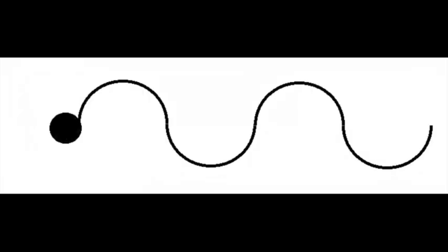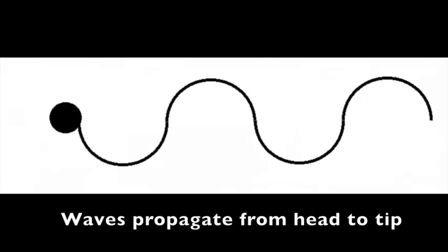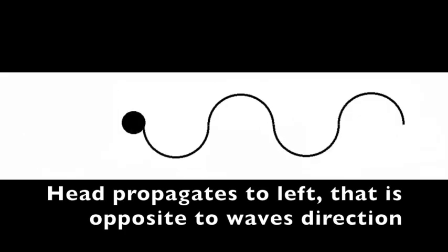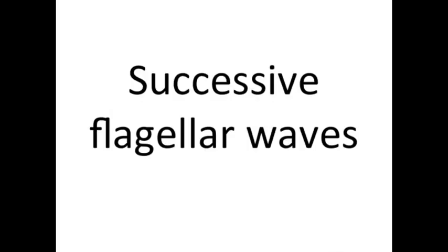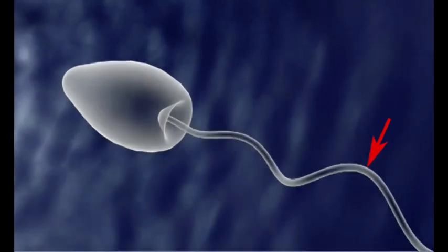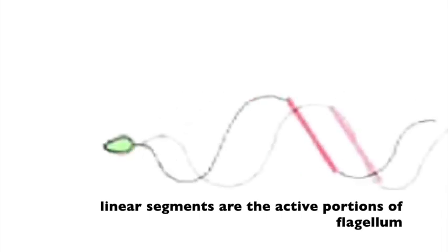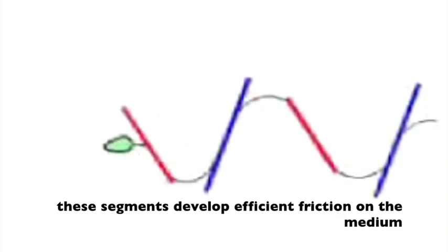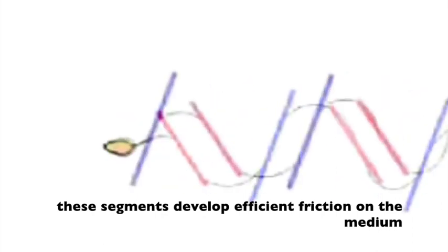Wave propagation: Right after activation, waves propagate from the head to the flagellar tip. This generates a force that will propel the sperm with the head forward. The wave crests progress from left to right and the progression of the head is from right to left. In between two wave crests is a linear segment. The progression of successive segments to the right develops a force pushing on the medium and leading to the displacement of the whole cell to the left.